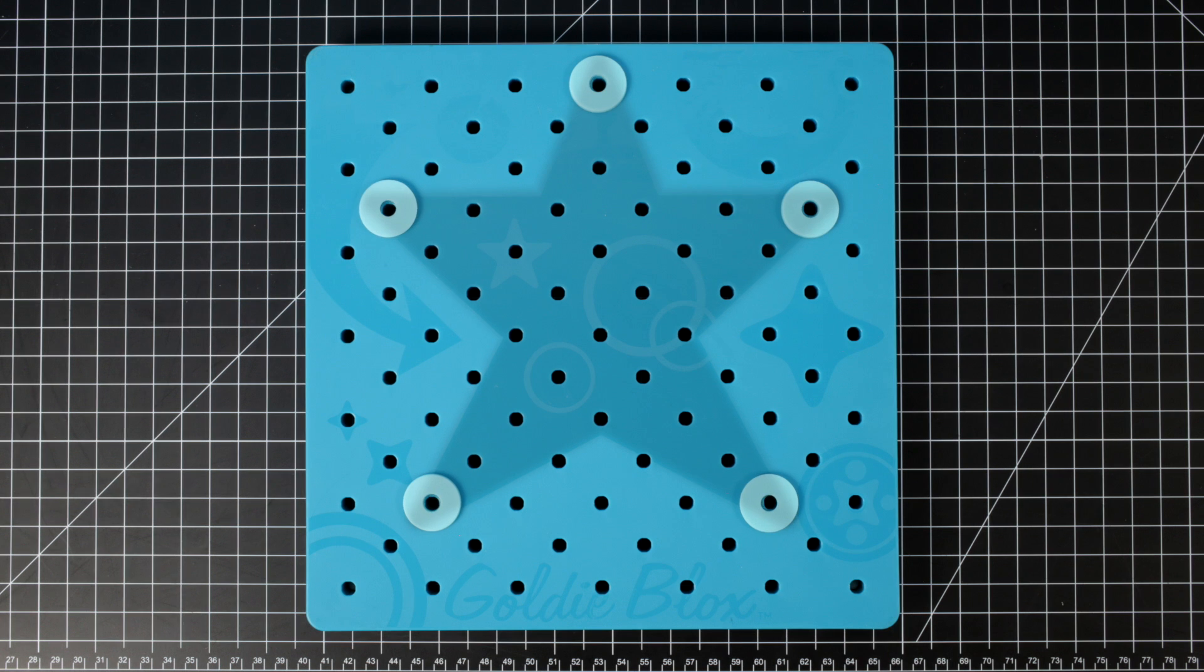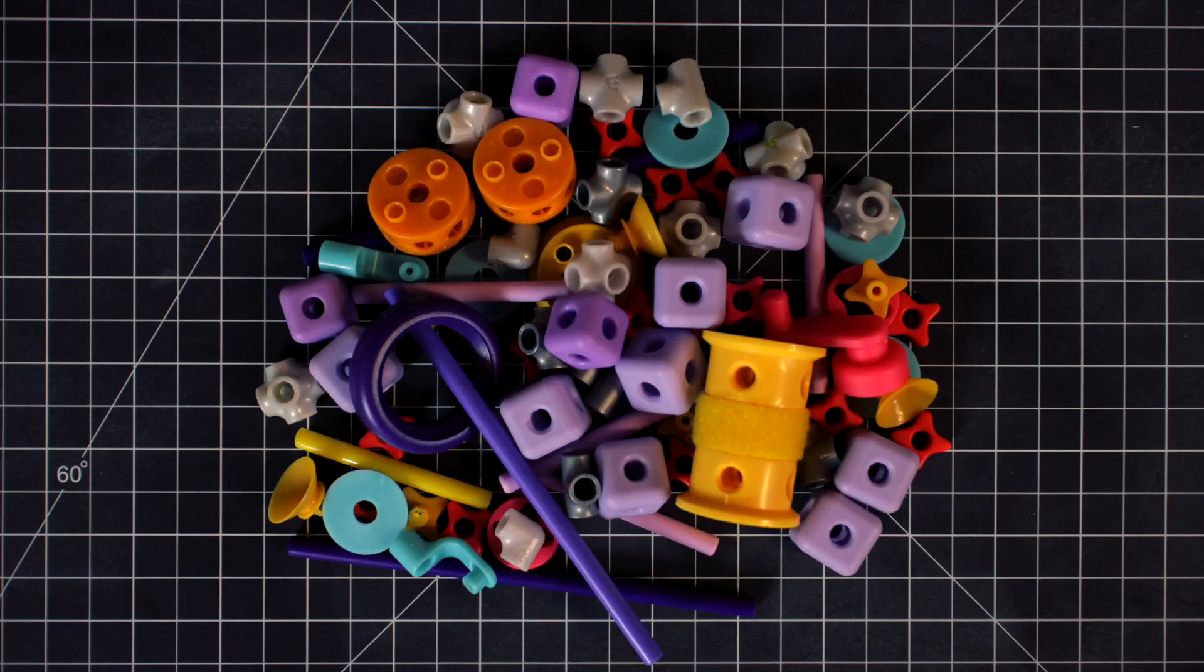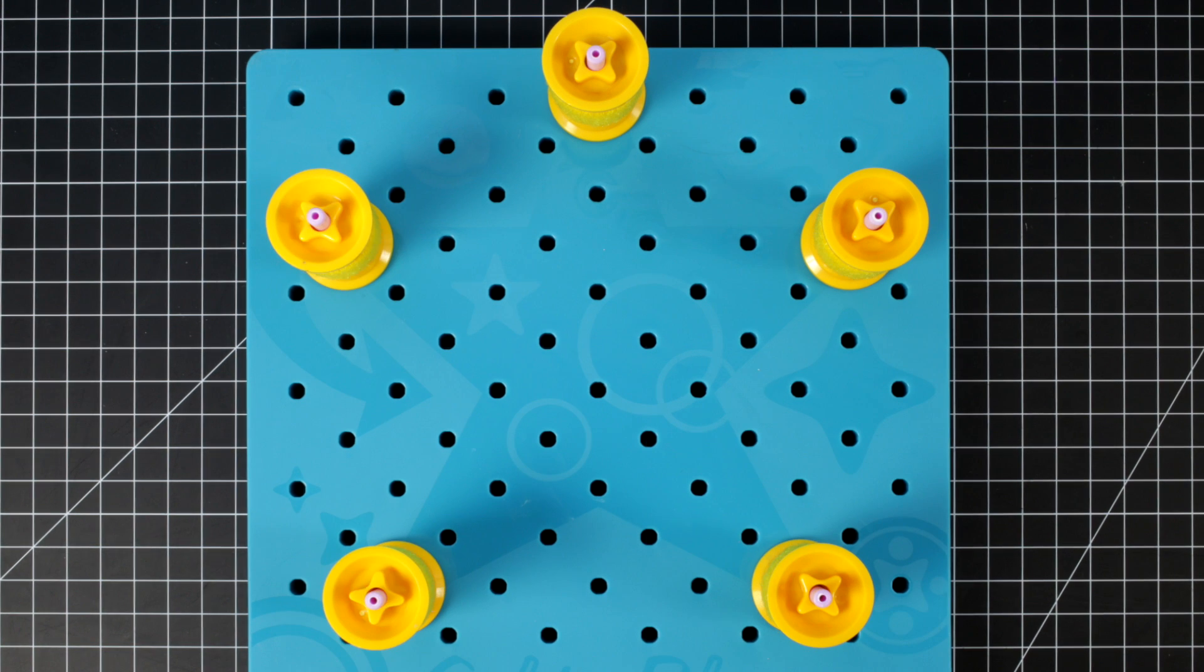The washers will help make the machine spin faster. Now put an axle in each of the holes like this. Step two: You can slide a wheel on top of each axle.